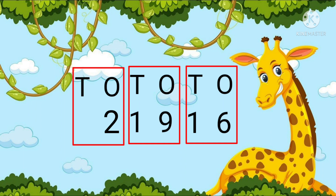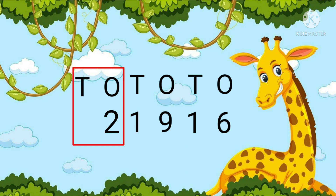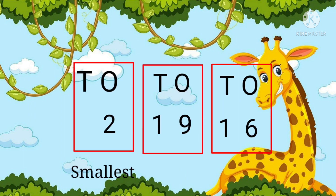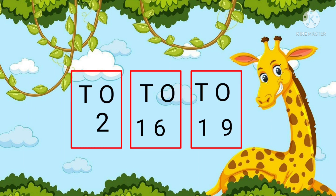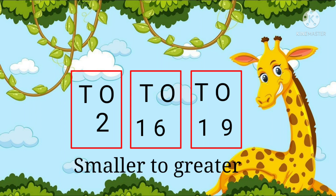Then we will check the tens place — both the remaining numbers have the same tens place, so let's go to the third rule, which is checking the numbers at the ones place. Going by that, when we compare the numbers we find out that 9 is greater. So let's arrange all three in ascending order: 2 is smaller, 16 is greater than 2, and 19 is the greatest among them.